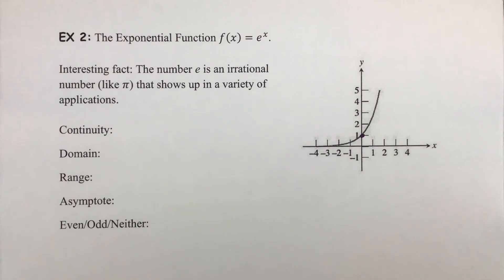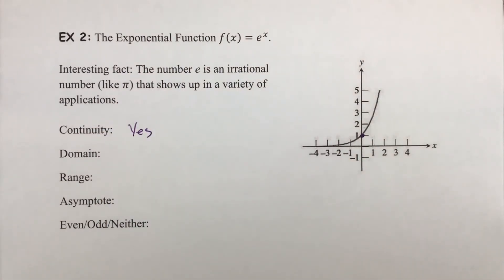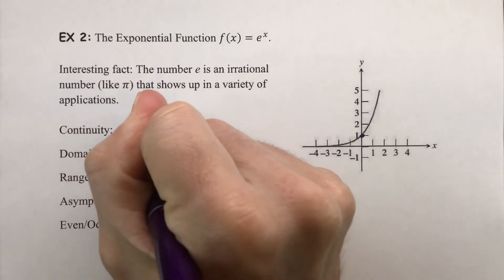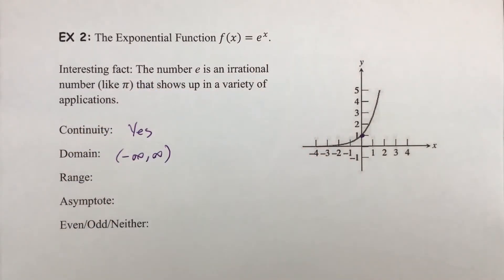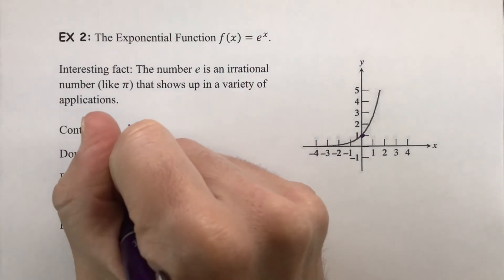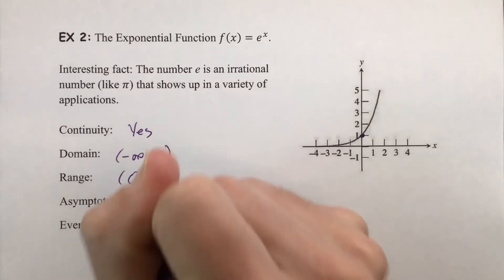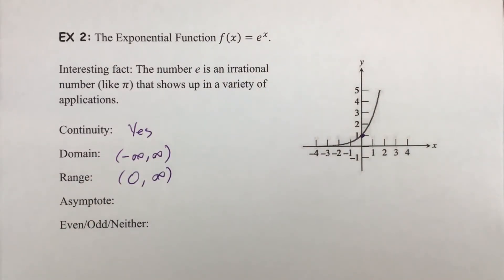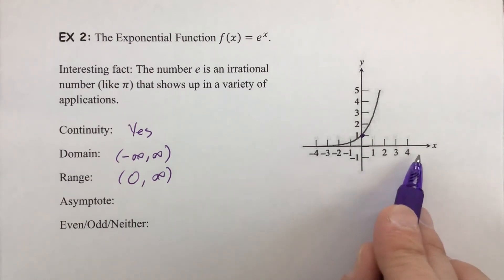The rate at which the graph extends to the right versus upward makes it look like a vertical asymptote, but it continues forever to the right. Regarding continuity: yes, the exponential function is continuous — there are no values it cannot accept. The domain is all real numbers. The range is bounded at the x-axis due to the horizontal asymptote, so it is the open interval from zero to infinity. The horizontal asymptote is at y = 0.